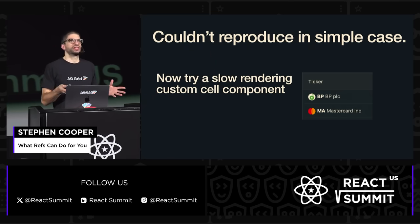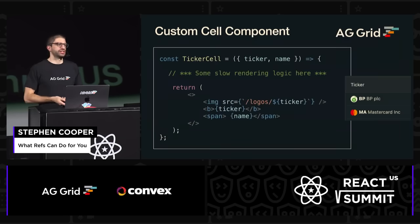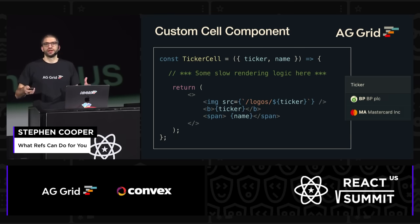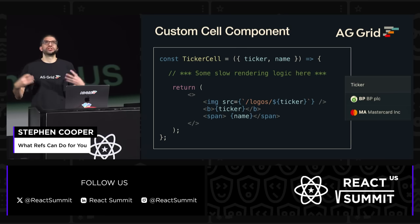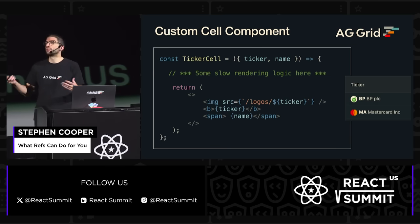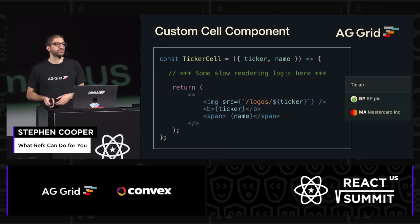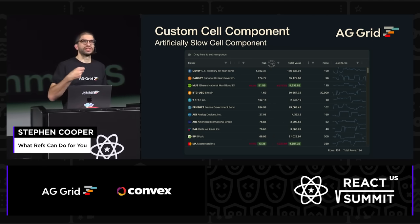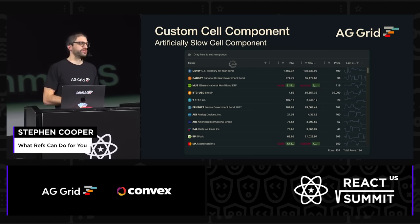We didn't really see this performance issue in the simple case. So now we put in a custom cell component and make it artificially slow — we put some slow logic in there, maybe like a for loop which does a lot of work before it renders things. These are just ideas of simulating what a user might provide to us, because we're not in control of what the user is going to give us. But we need to make sure the grid still works well in those situations. When we did this and put it into the grid, we could see we had this slow behavior again.